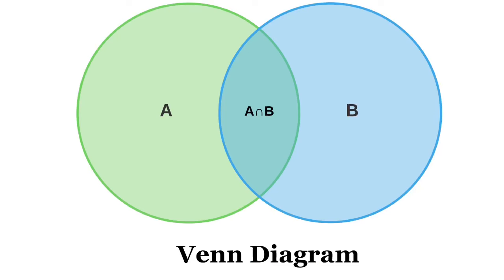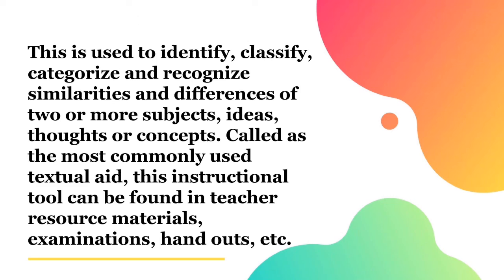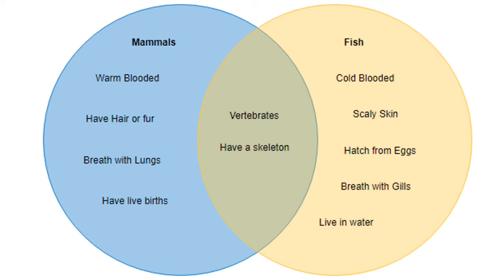A Venn diagram is used to identify, classify, categorize, and recognize similarities and differences of two or more subjects, ideas, thoughts, or concepts. This is called the most commonly used textual aid, and this instructional tool can be found in teacher resource materials, examinations, and handouts. It uses circles to show relationships among things or finite groups of things. Circles that overlap have a commonality, while circles that do not overlap do not share those traits.